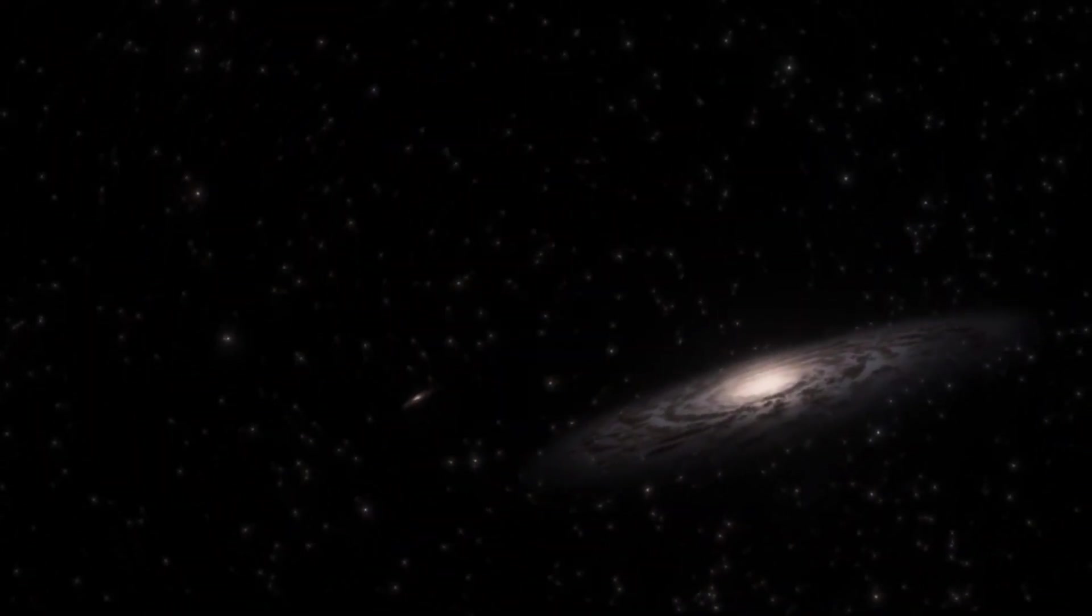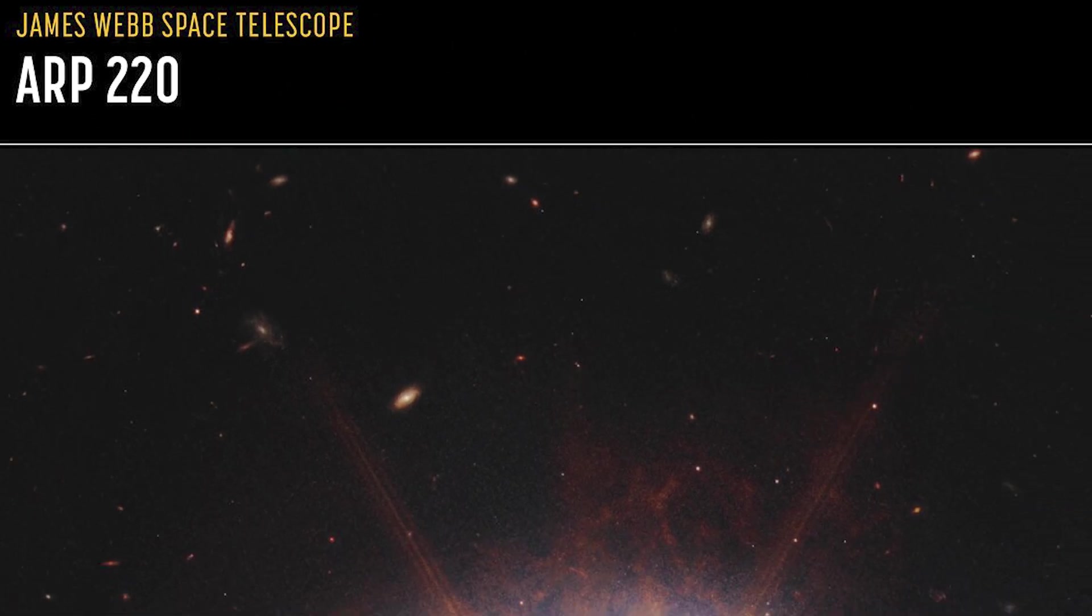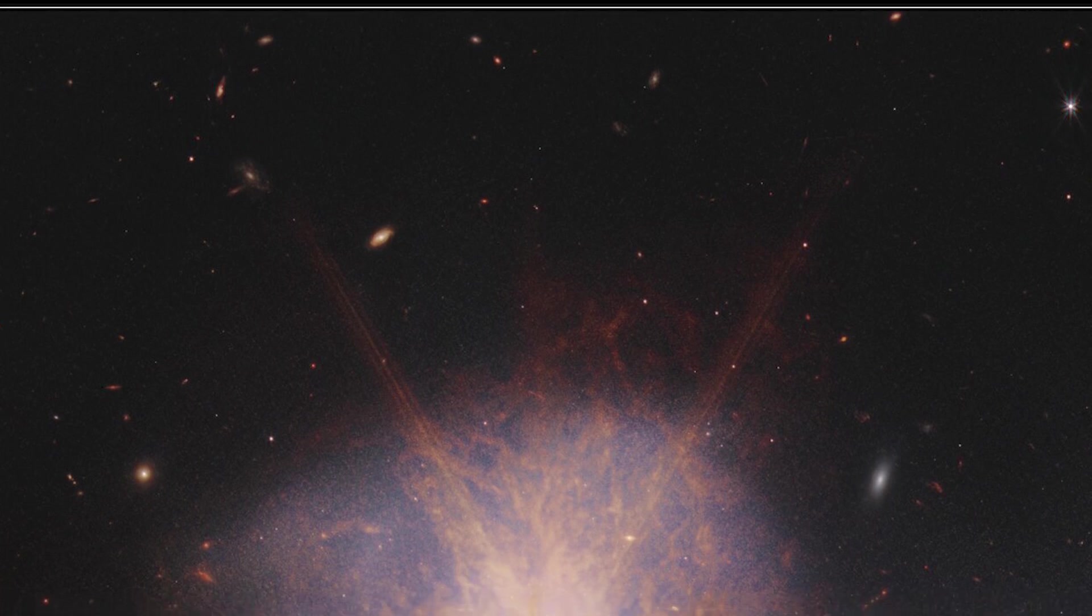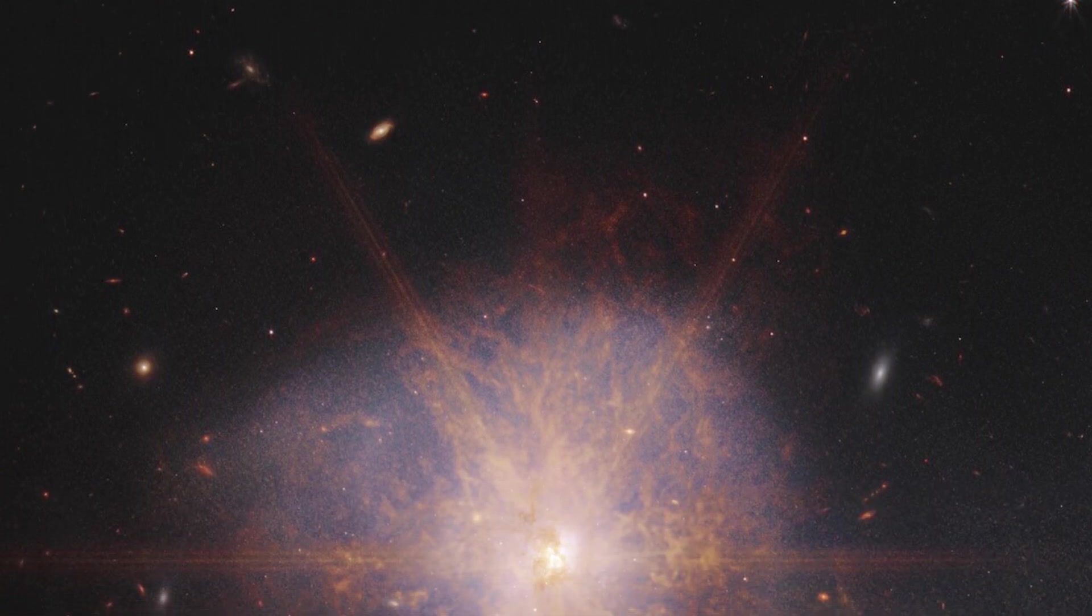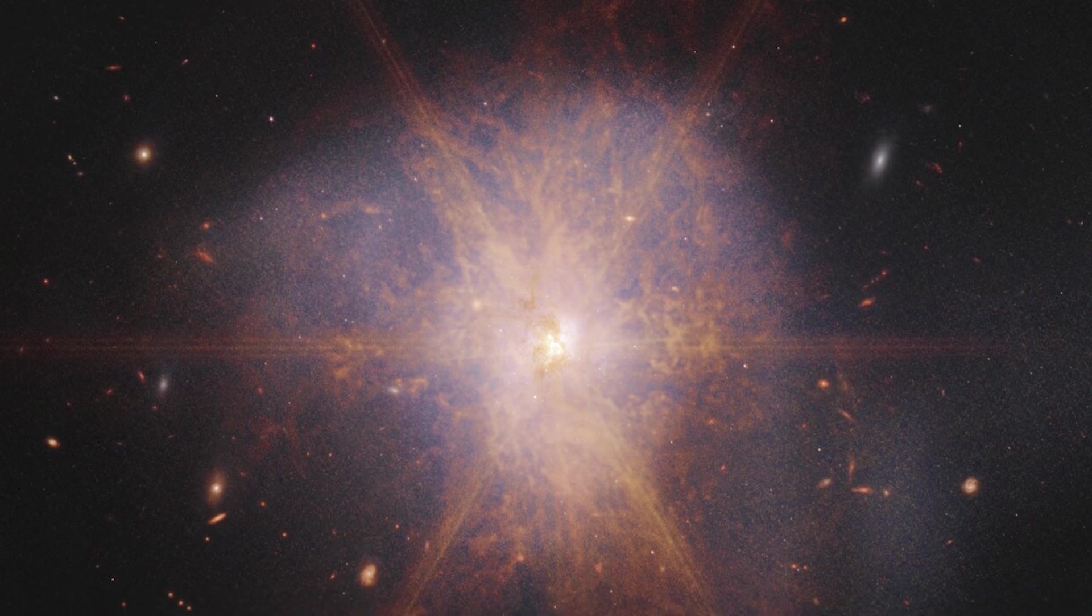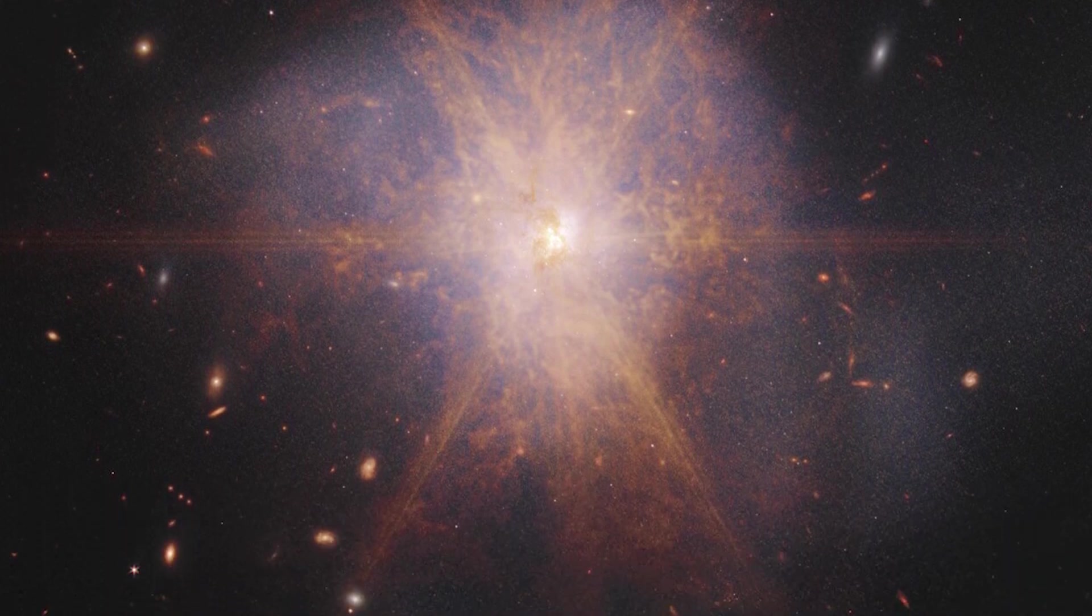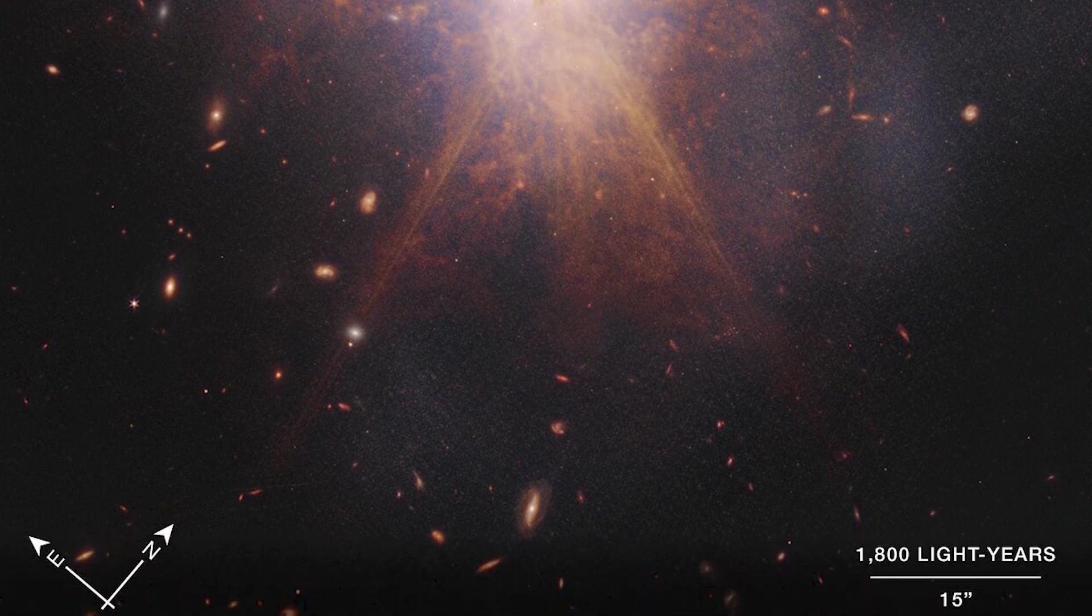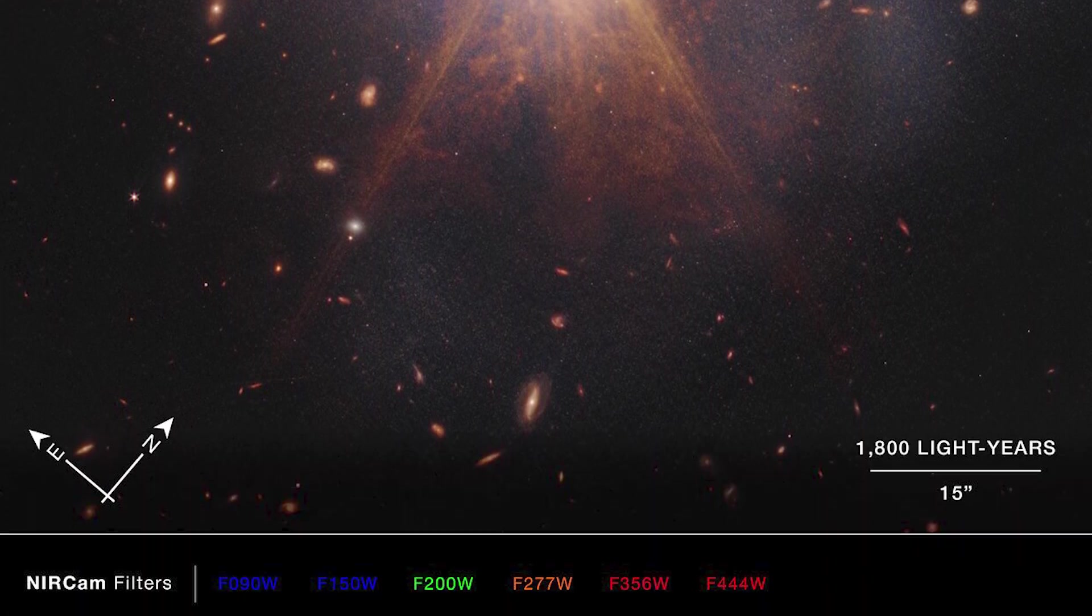NASA has made an exciting announcement about the galactic merger ARP 220, which was captured by the James Webb Space Telescope. This impressive galactic merger can be seen shining among other galaxies in the night sky. When two spiral galaxies merge, ARP 220 shines brightest in the infrared, making it perfect for observation by the James Webb Space Telescope.